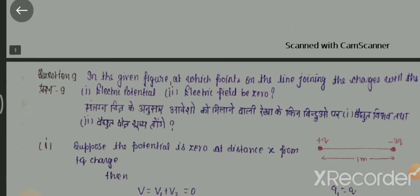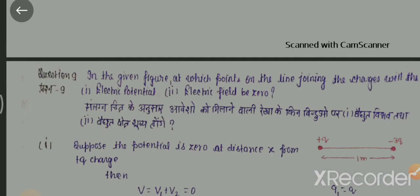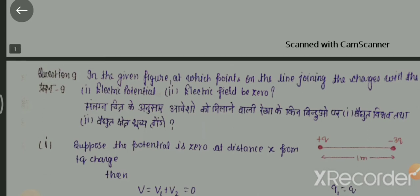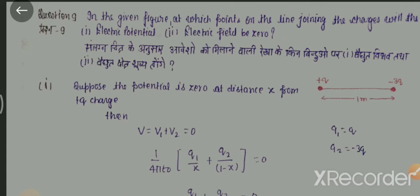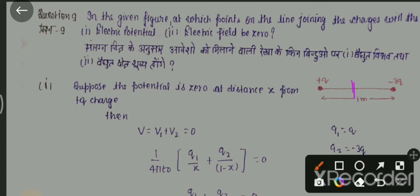अगला numerical कहता है: in the given figure, at which point on the line joining the charges will — first — electric potential be zero, and second — electric field be zero? किस point पर electric potential 0 हो, और किस point पर electric field 0 होगा? Potential किसी बीच वाले point पर होगा, लेकिन field दूर बाहर की तरफ होता है। पहले हम मानते हैं कि x distance पर, plus q वाले से अंदर की side, potential 0 होगा।